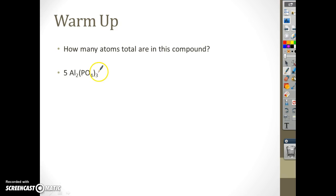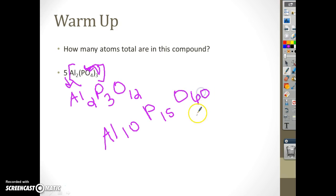So what do I do first here? I distribute my subscript, so it only applies to the guys in the parentheses. I'm going to end up with how many P's? Three. How many O's? Twelve. And this three will not change my Al in any way, so I'll still have Al₂. Next I'm going to distribute my five, it applies to everybody because it's like having brackets here. So I'm going to end up with Al₁₀P₁₅O₆₀ for a total of 85 atoms.